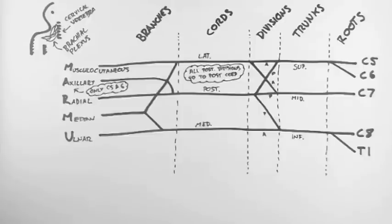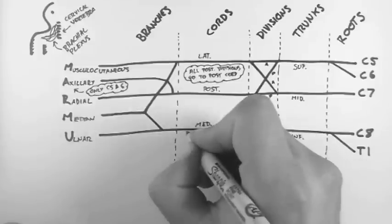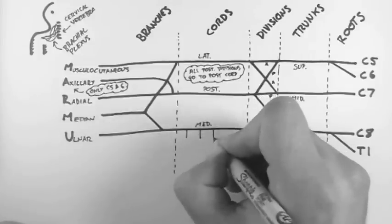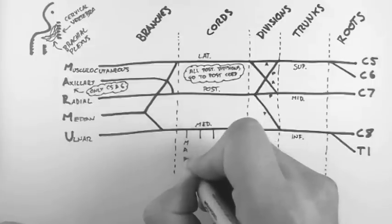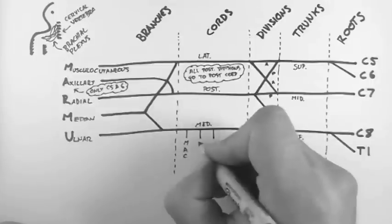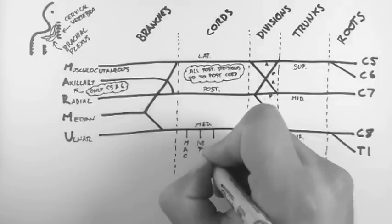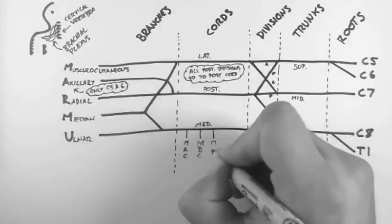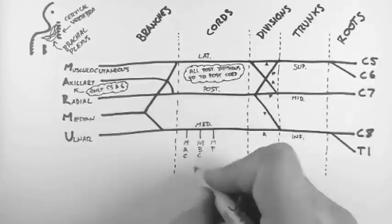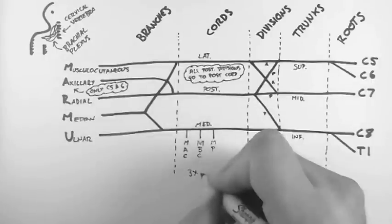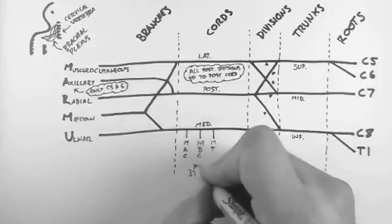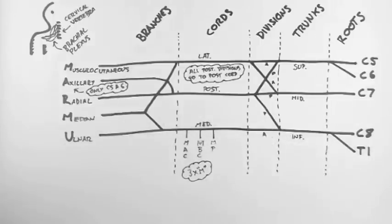So let's add in the details. From this medial cord, there are three nerves. And these are known as the medial antibrachial cutaneous, the medial brachial cutaneous and the medial pectoral. So these three nerves all begin with M. So I think of them as the three M's.